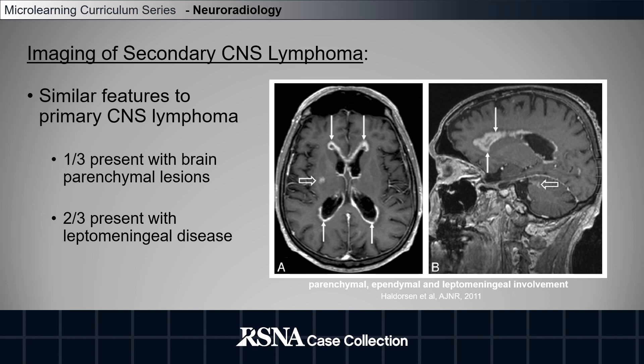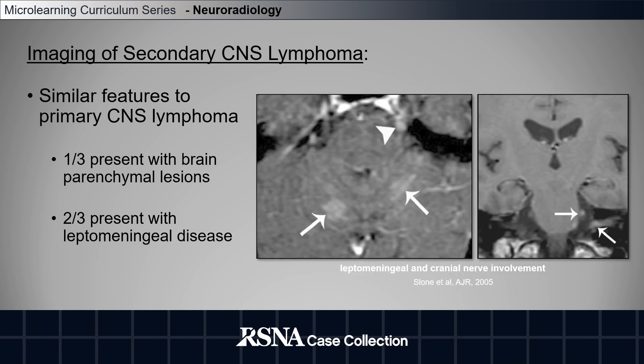Secondary CNS lymphoma will have similar imaging features to primary CNS lymphoma. A third of cases will present with brain parenchymal lesions and two-thirds will present with leptomeningeal disease. This is an example from the literature of secondary CNS lymphoma showing parenchymal, ependymal, and leptomeningeal involvement. You can see in these additional images leptomeningeal involvement of the cerebellar folia and also involvement along the cranial nerves.